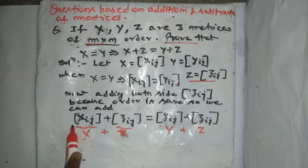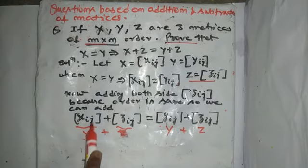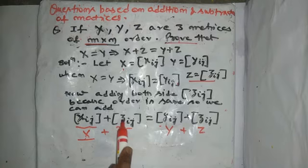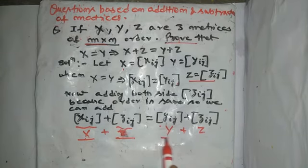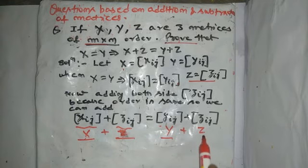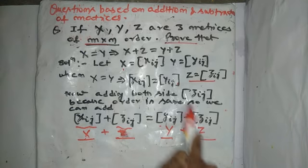So, now I will add Zij to Xij and again Zij to Yij in this side and in this side. Now, what we will see?